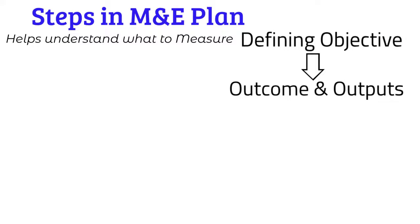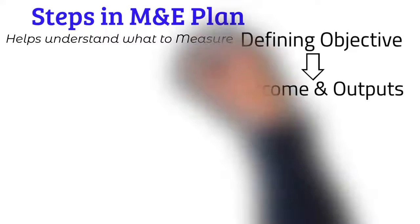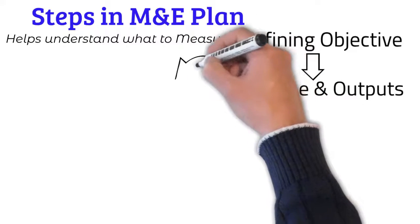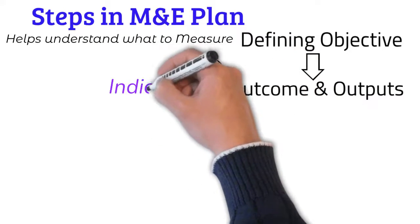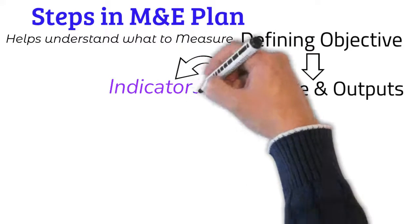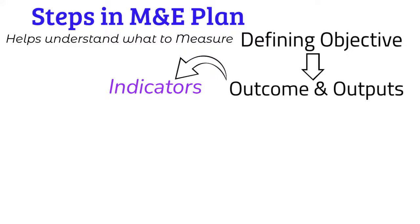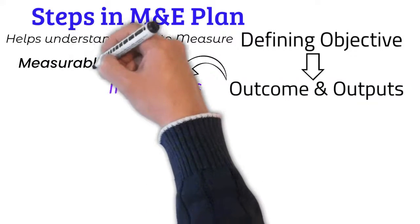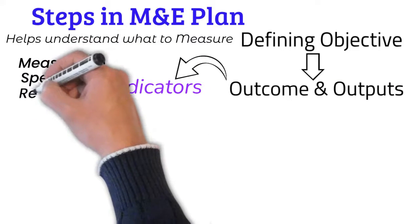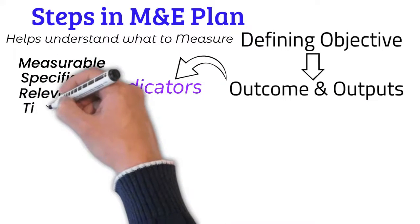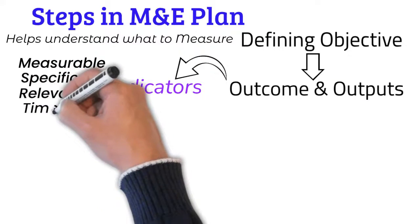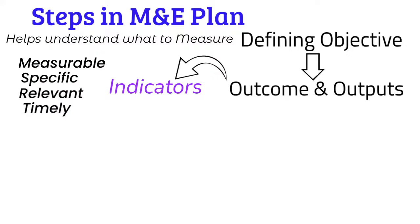Once we have identified our outcomes and outputs, we need to define and determine the indicators that we will use to measure the progress of outcomes and outputs. While fixing our indicators, we should keep in mind that our indicators should be measurable, specific, relevant, and be able to be collected within the time frame of the project or the program.